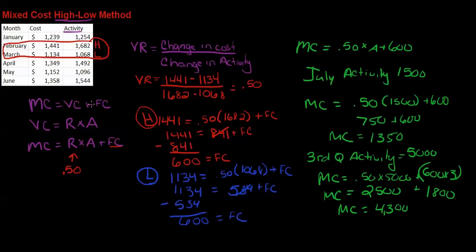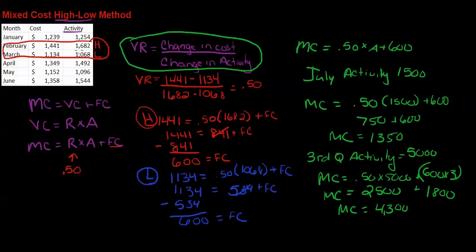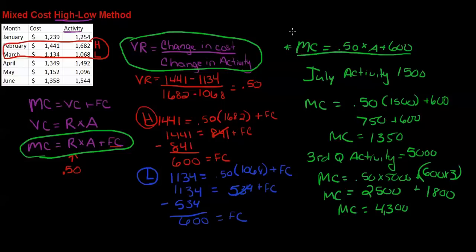You can use the high-low method to calculate the fixed and variable components using your variable rate formula. Always start with that. Your high and low points are based on activity — always use activity to determine high and low. Once you have your rate, use your mixed cost formula with either the high or low point to solve for fixed cost. Then use that information for planning going forward. This cost formula is really important because it allows us to plan — like we did for July at 1500 activity, and for the third quarter at 5000 activity. Just make sure your fixed cost accounts for the number of months you're planning for.